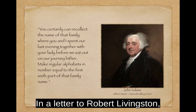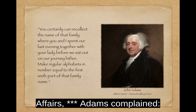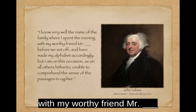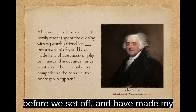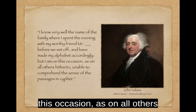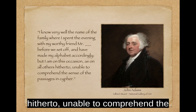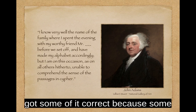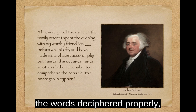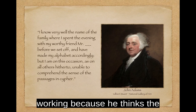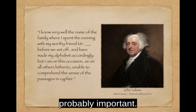In a letter to Robert Livingston, the Secretary of Foreign Affairs, Adams complained: "I know very well the name of the family where I spent the evening with my worthy friend, Mr. Blank, before we set off, and I have made my alphabet accordingly. But I am, on this occasion, as on all others hitherto, unable to comprehend the sense of the passages in cipher." He goes on to say that he knows he got some of it correct because some of the words deciphered properly, but others didn't. He even regrets that it isn't working because he thinks the ciphered portions are probably important.